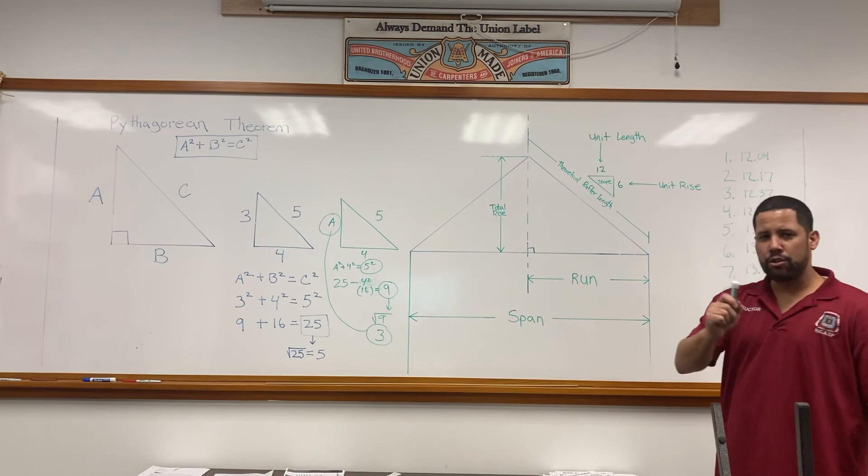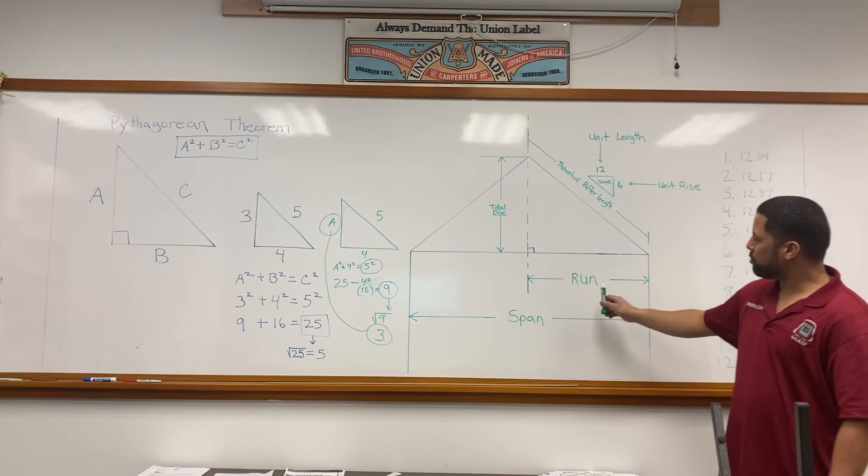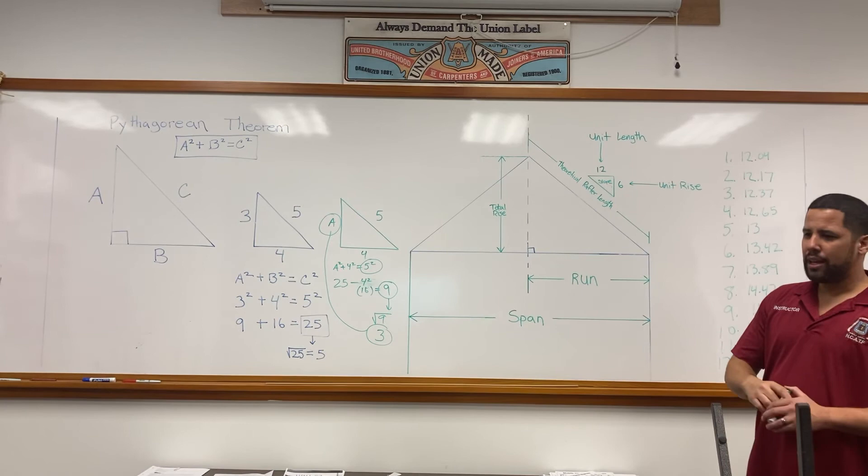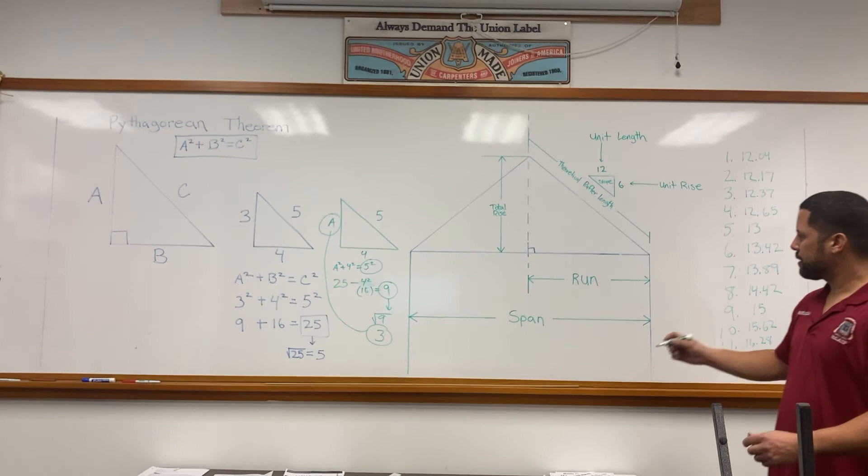In this particular example, we have a roof slope of 6 in 12. What does that mean? It means for every 12 inches of run, it goes up 6 inches. So if a roof is 2 feet long and it's 6 in 12, it's going to be 12 inches tall, and so forth.